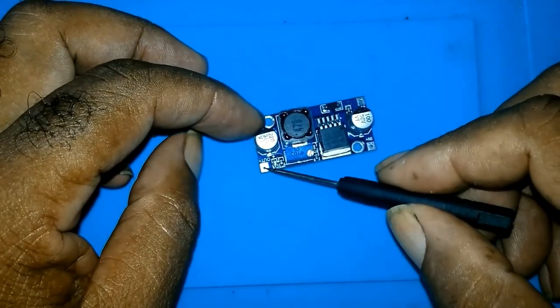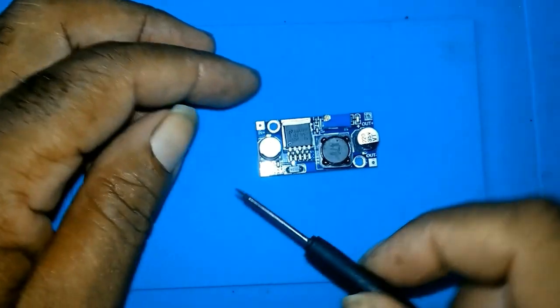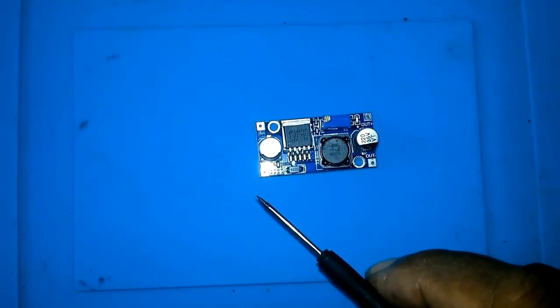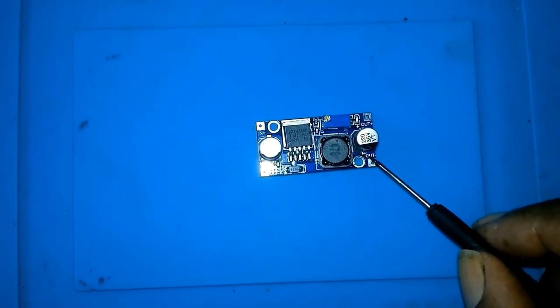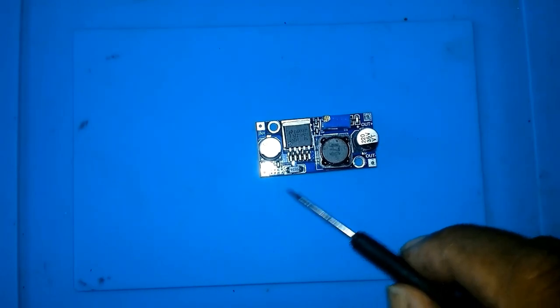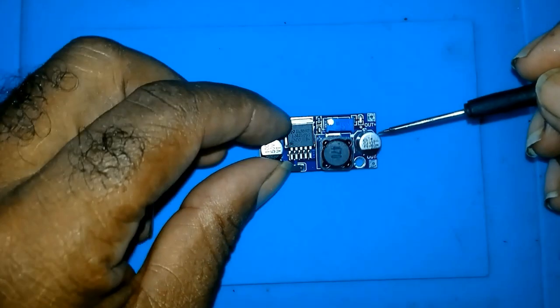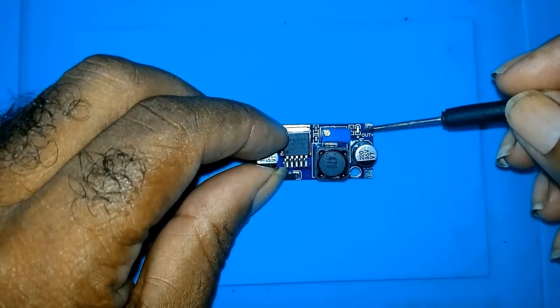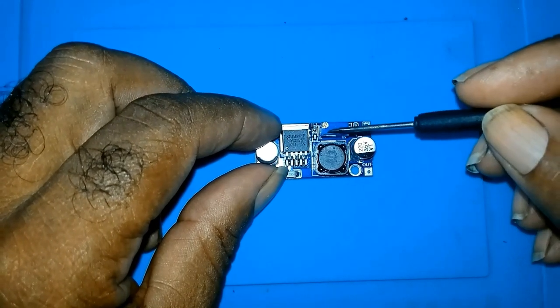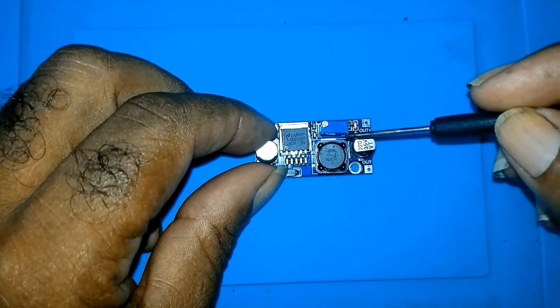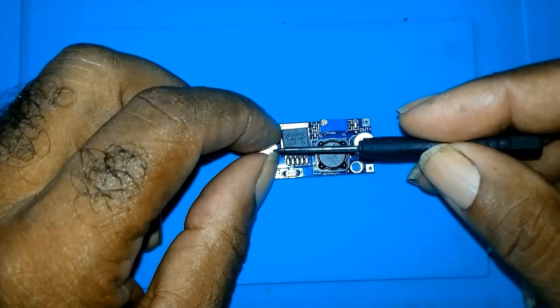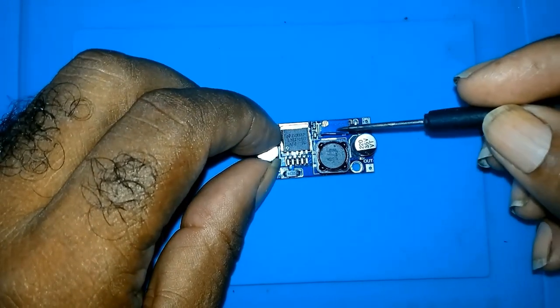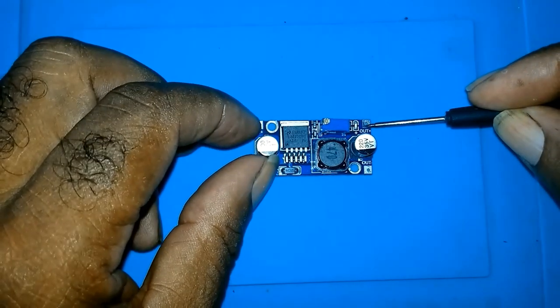The input voltage is from 3 volts to 40 volts, the output voltage is from 1.3 to 35 volts. It has a light indicator here. When you turn this port, whatever voltage you have here, whether it's 19, 12, 24, you turn this port to get the desired voltage you need here.